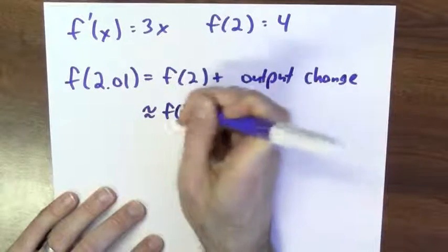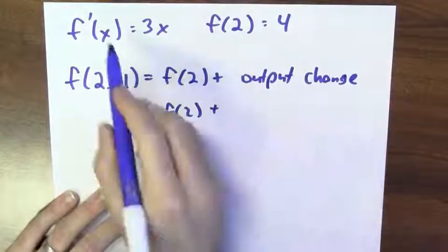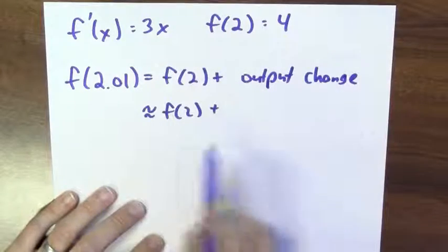Well, the output change is approximately something that I can compute from the derivative. The derivative is infinitesimally the ratio between output change and input change.